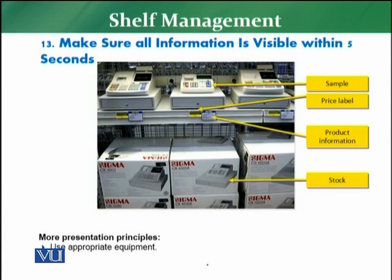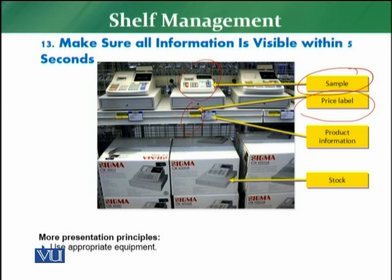The next principle is to make sure all information is available to the customer within five seconds. The five-second principle means the customer should be able to see four basic pieces of information. First, whether the product sample is available. Second, the price label — the customer should be able to immediately see the price, as that is the next thing that comes to mind after seeing the product.